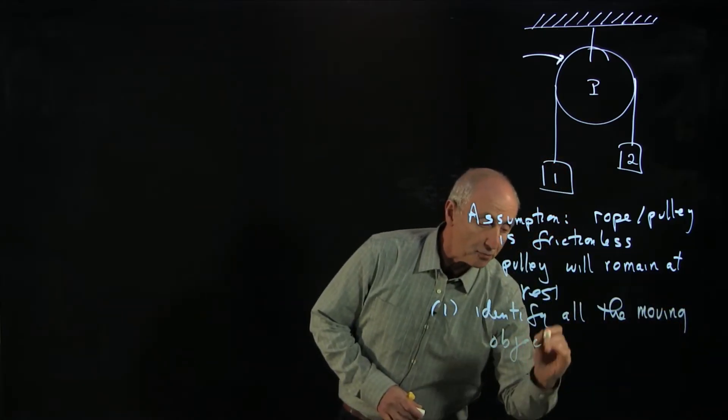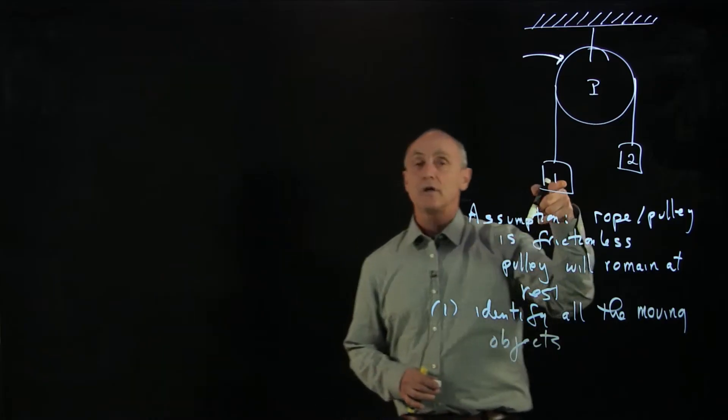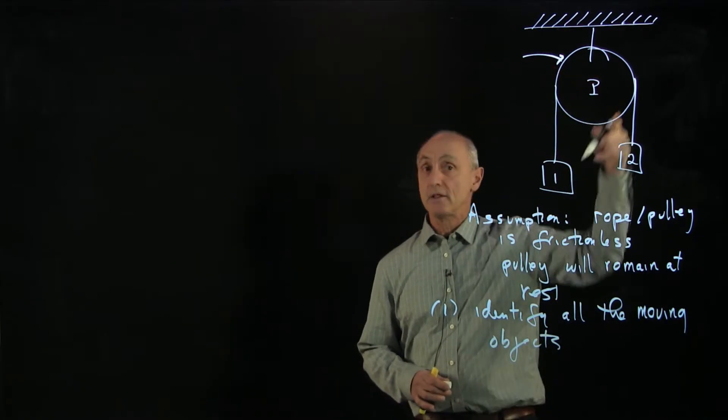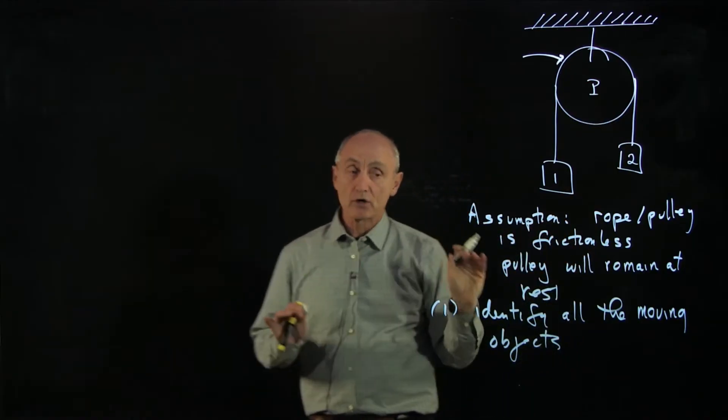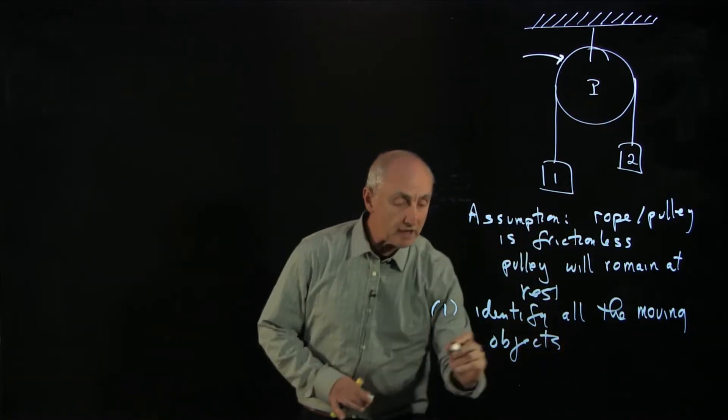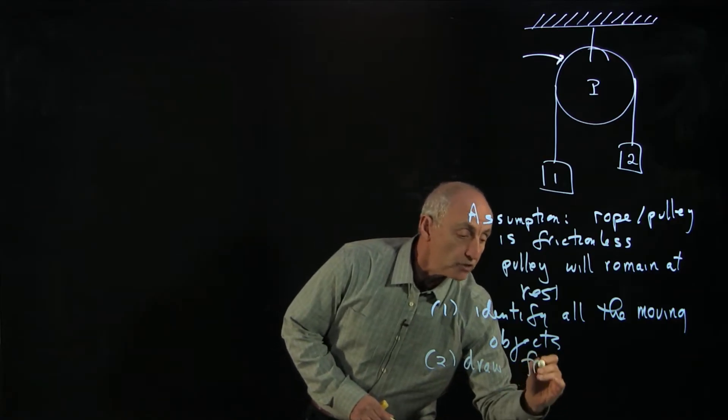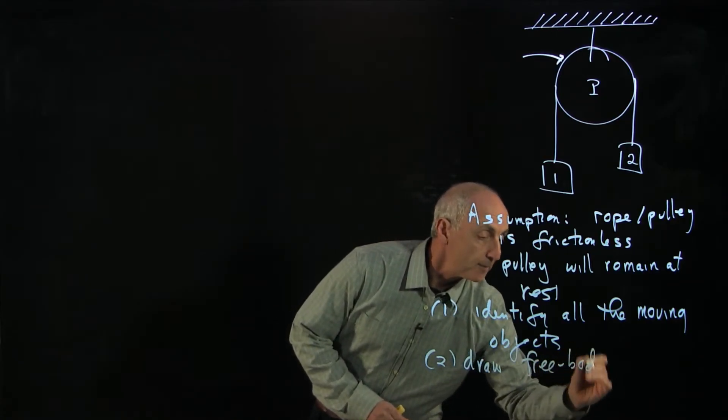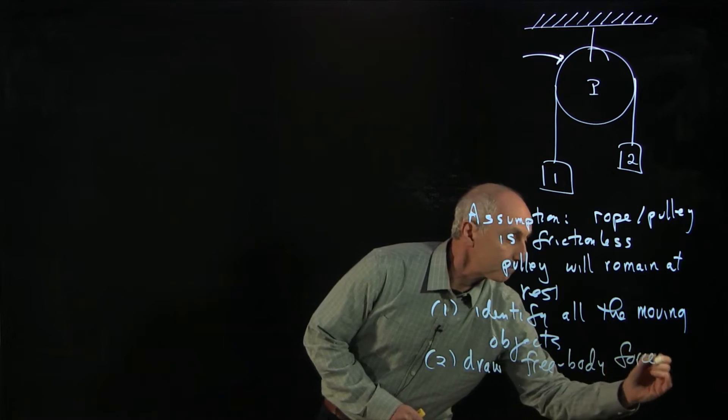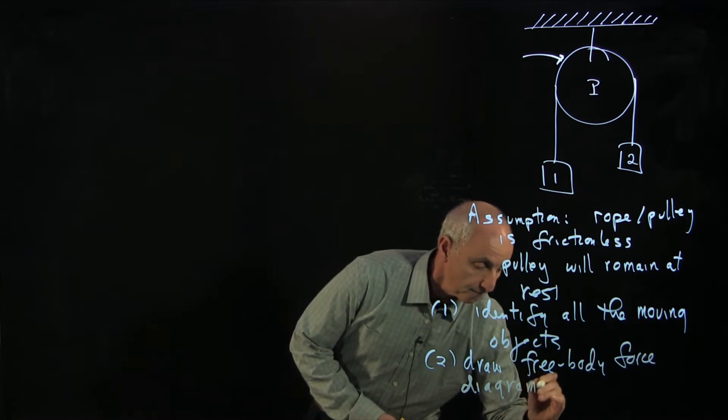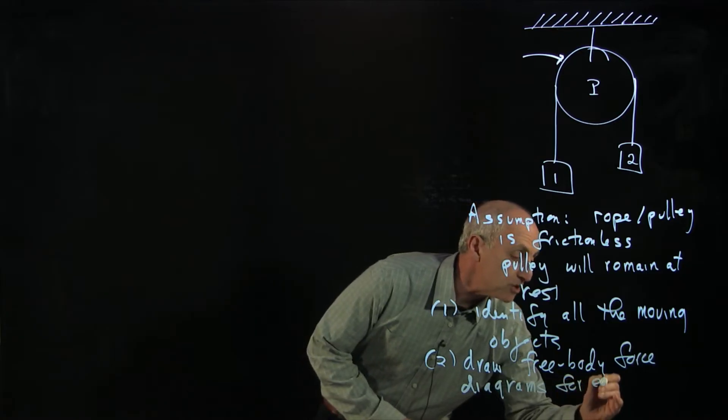We really have three: mass one, two, and the rope. So our goal now is to identify all the moving objects and to draw free body force diagrams for each moving object.